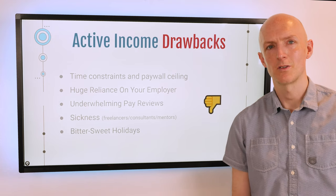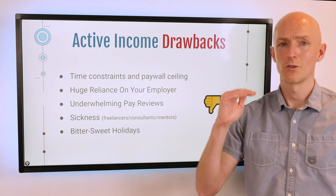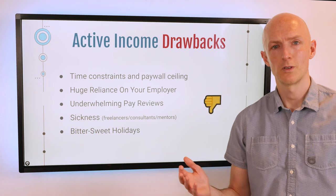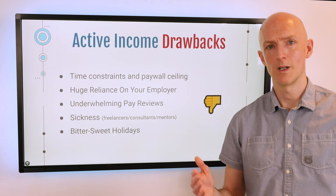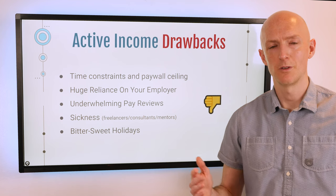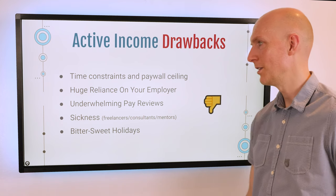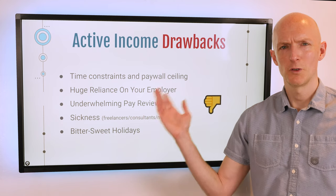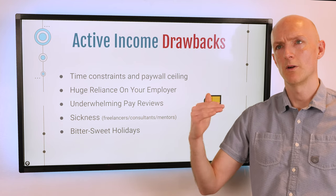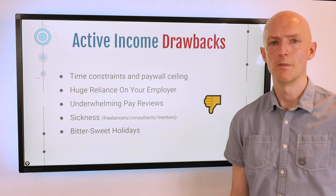Next, the drawbacks of active income. Ultimately, there is a time constraint — you can only work so many hours in a day. A freelancer with an hourly rate is going to be maxed out after eight or ten hours, and performance is going to be decreasing after that eight-hour mark for sure. Therefore you hit a pay ceiling as well — there are only so many hours you can work in a day, a week, a month, and therefore your income is limited at a certain amount.